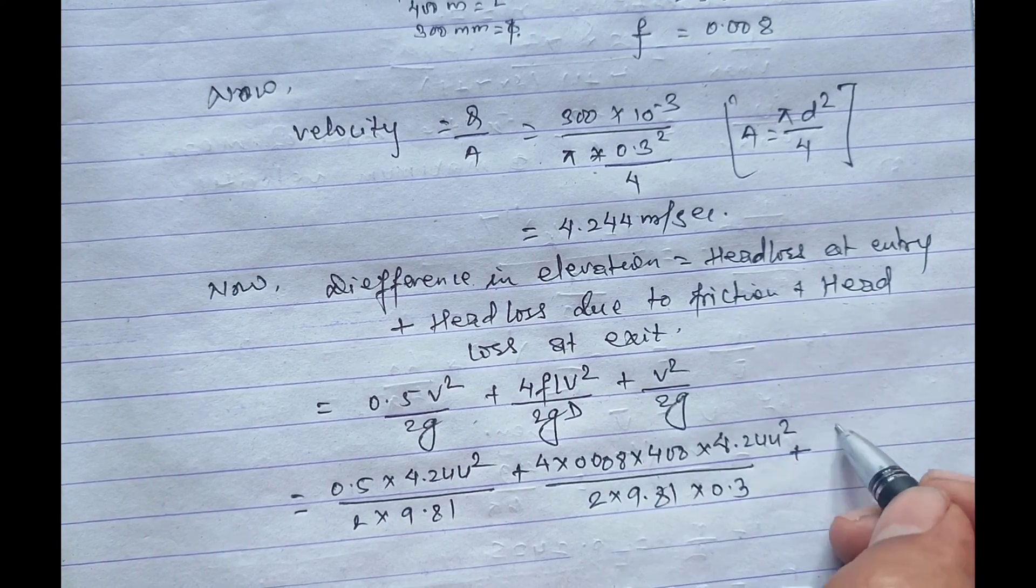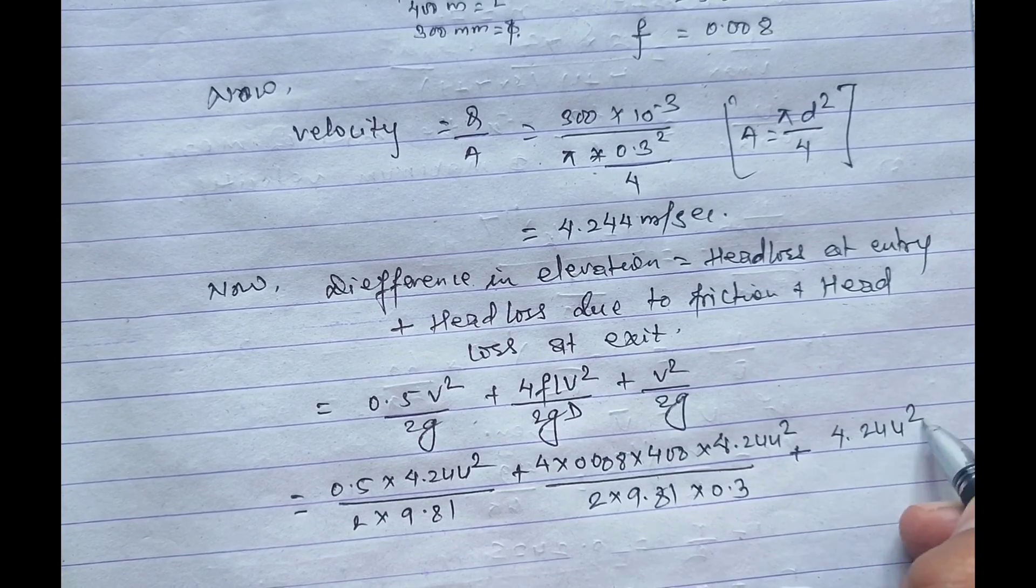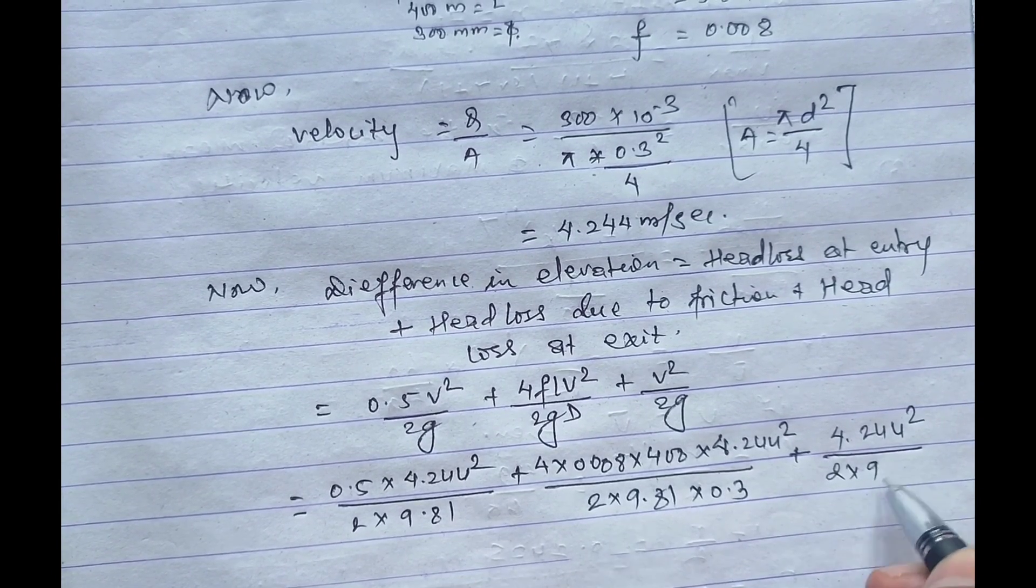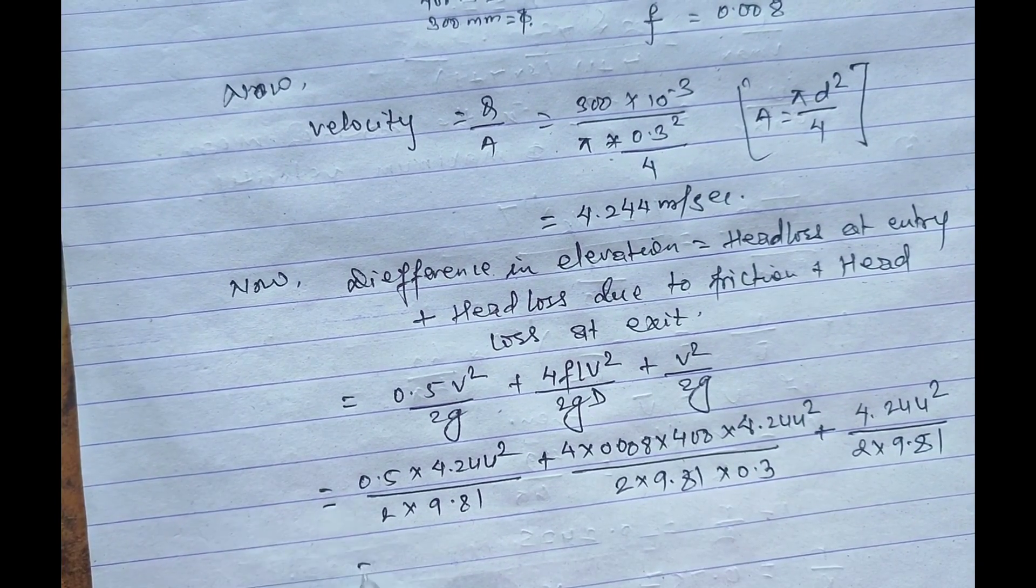Plus 4.244 whole square divided by 2 into 9.81. On solving this we'll get...